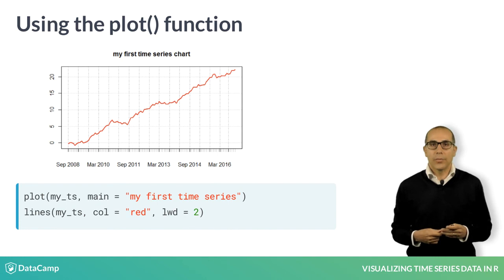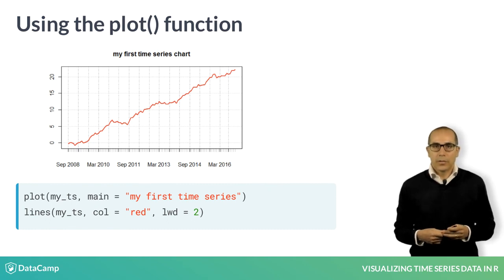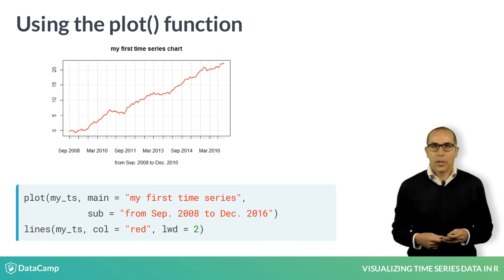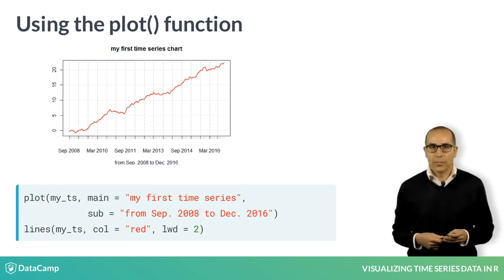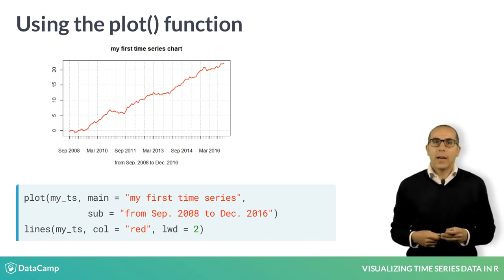We will see more about the lines function in the next chapter. The line thickness can also be adjusted with the lwd argument, and a title can be added with the main argument. You can even add a subtitle with the sub argument. There are many more arguments that can be used — I invite you to have a closer look at the documentation to find out more.